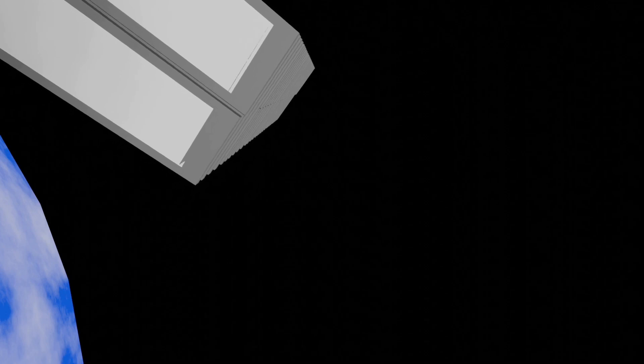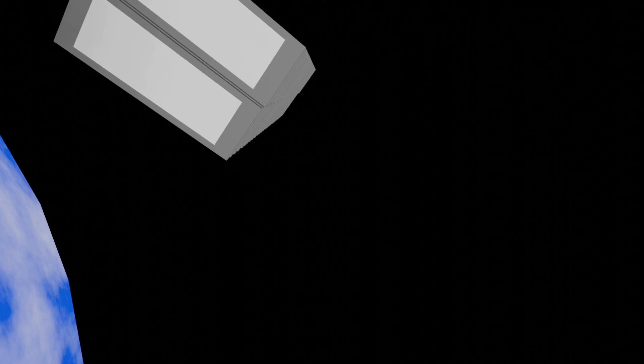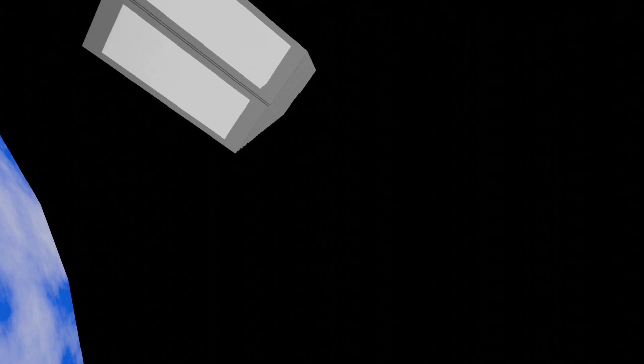We've got the sun beaming into our camera view there. Halo deploy confirmed. What you are seeing live are those Starlink satellites in space, drifting away from our second stage which confirms deployment. Shortly they will deploy their solar array and over the next few days and weeks they will distance themselves from each other and use their onboard ion thrusters to make their way to their operational orbit. Beautiful live view.